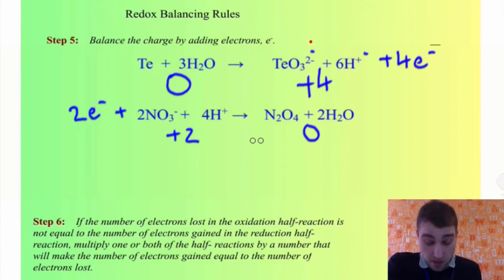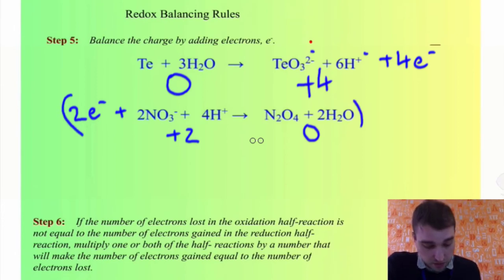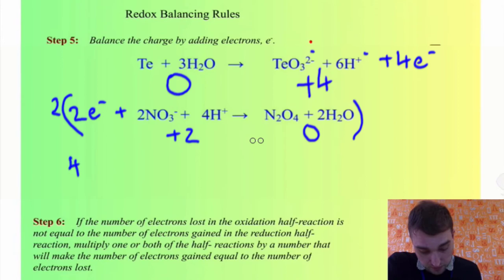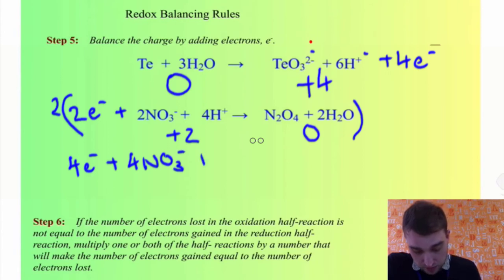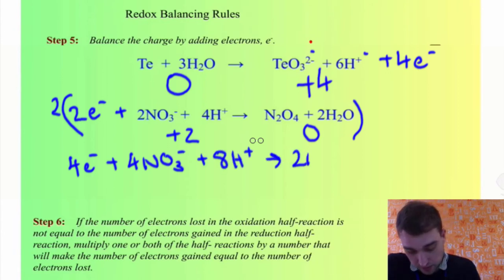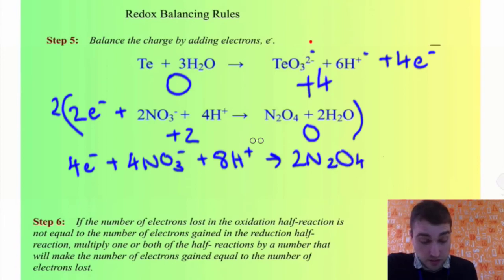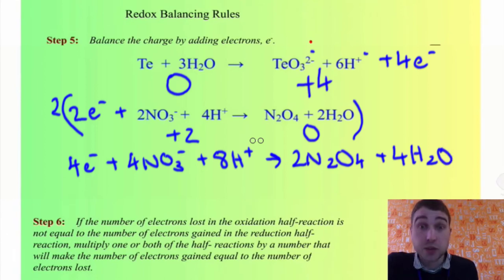The next step is to get the number of electrons the same in both equations. The top equation has four electrons and the bottom has only two, so we need to multiply everything in the bottom equation by 2. That gives us 4 electrons + 4 NO₃⁻ + 8 H⁺ going to 2 N₂O₄ + 4 H₂O — treating it just like a mathematical equation.